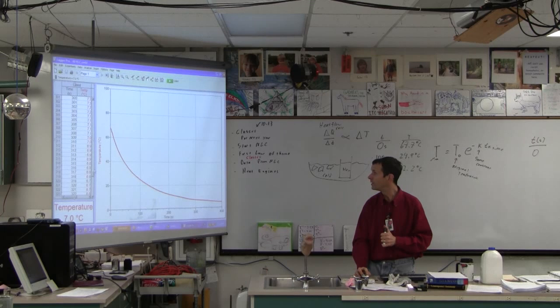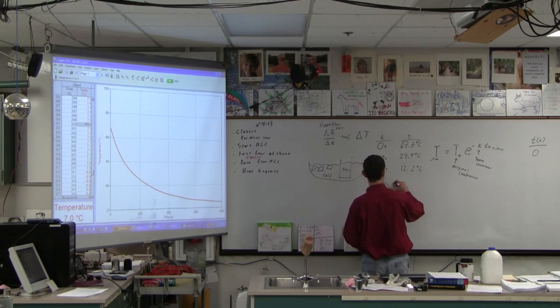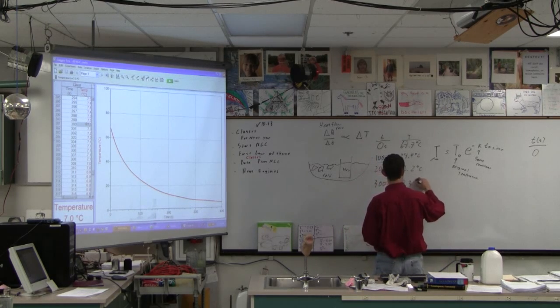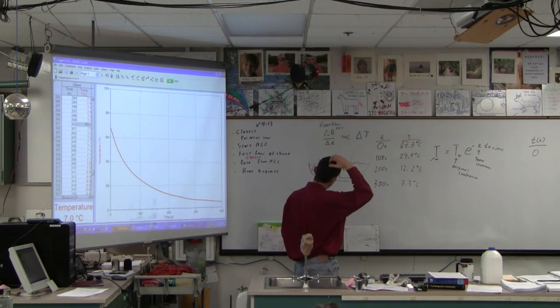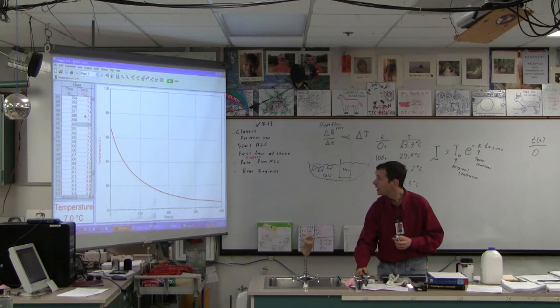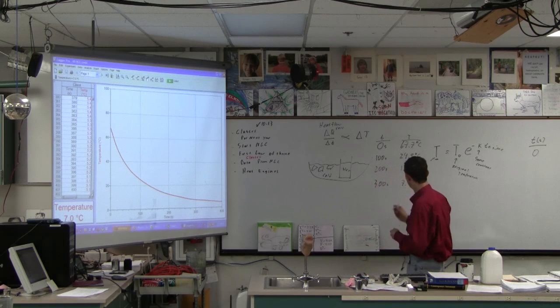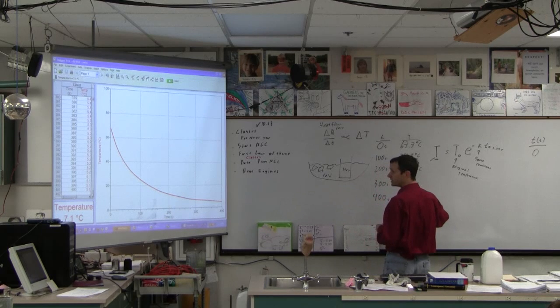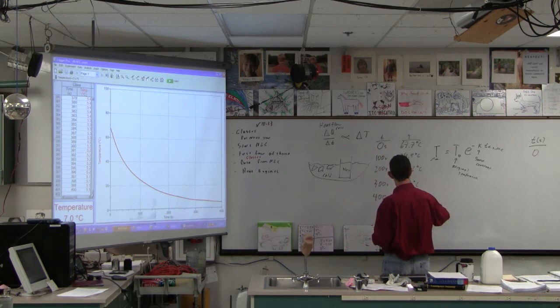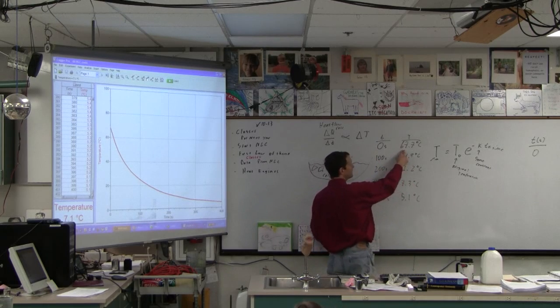And then 300, to be about there, 7.3. So here, to just graph this by hand, you've got the data points that you can graph. And then let's go 400, and then try to make a nice smooth curve through it. At the end, 5.1.